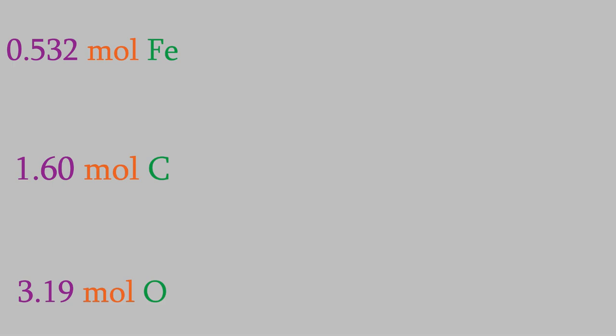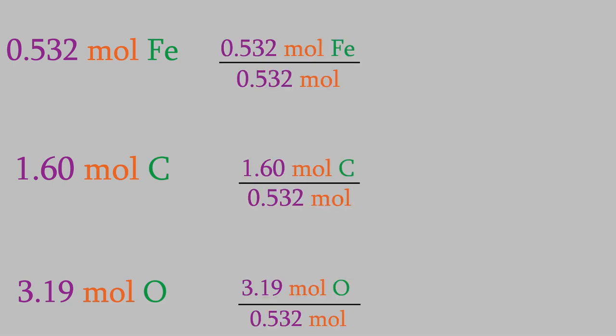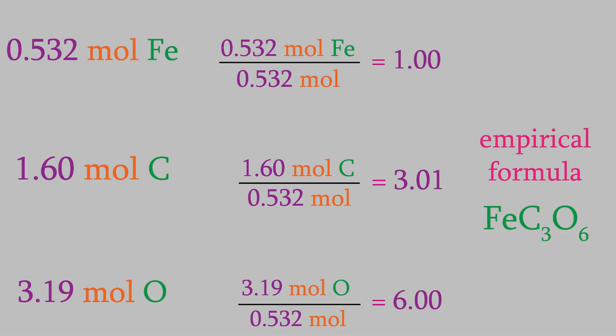So now we know how many moles of each element we have. Unfortunately, chemical formulas must always have whole numbers of subscripts. We can't have a formula like Fe with a subscript 0.532, C 1.60, and O 3.19. To figure out the whole number ratio between the three, we divide all of them by the smallest of the three numbers. If we're lucky, that'll give us three integers, which we can use as the subscripts in our formula. So let's try it. The smallest number is 0.532 moles, so we'll divide all three numbers by that. That gives us 1.00 for iron, 3.01 for carbon, and 6.00 for oxygen. So that gave us three integers, at least to the first decimal place. And that means our empirical formula is FeC3O6.